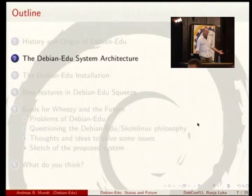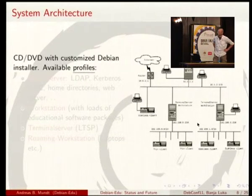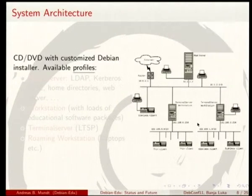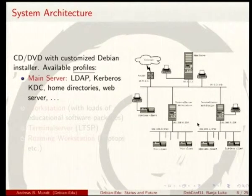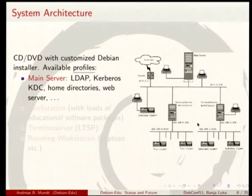What does the system look like? I brought a picture here. We have a main server, and this main server contains all services we need: an LDAP database, Kerberos KDC, home directory, web server, Nagios, and some other tools.